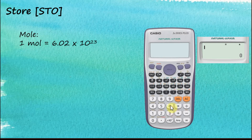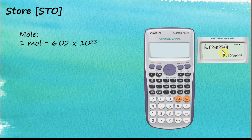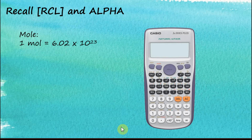To store 6.02 × 10²³ into the M button, first key in the number on the screen. The next step is to store it: click Shift, then Store. You will see the STO icon on screen. Then choose which button to store it in — I choose M, so I click the M+ button. The screen confirms the number is stored in the capital letter M. Now the next thing is to know how to use it.